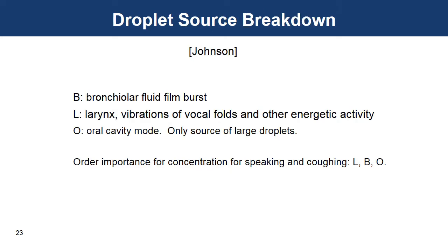So this work showed that there are three distinct sources of particle production, the lungs, the larynx, and the oral cavity. The oral cavity is the only place where large droplets above, let's say, the 50 micron range is the only place they come from. The larynx and the lungs produce smaller droplets. And the most important source for both speaking and coughing is the larynx.